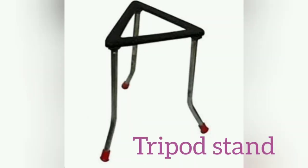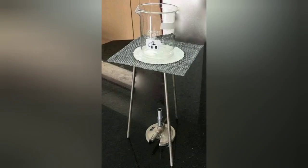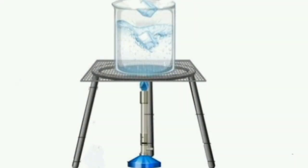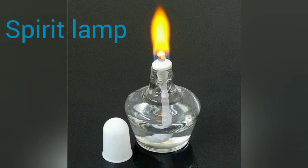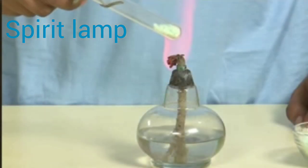A tripod stand is a stand with three legs. It is used in laboratories to support various apparatuses like beakers and conical flasks, when these are not in use or while heating. A spirit lamp is a flat and cylindrical glass or steel vessel with a brass neck through which a cotton wick passes, which soaks up the spirit filled in the vessel.